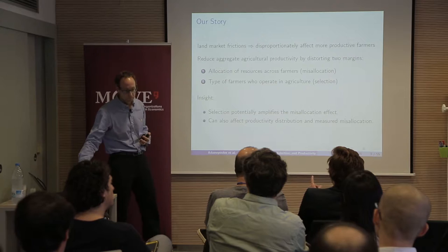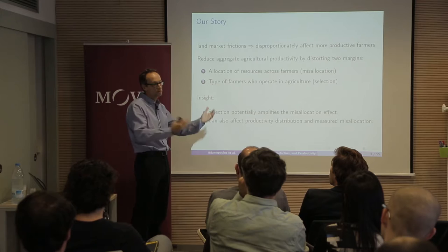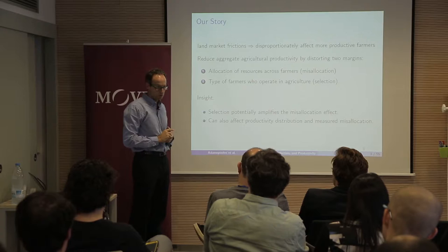Question: Clarify the selection channel — can farmers operate in agriculture or something else, or is it about the type of agents who become farmers? It's going to be a standard ROY model where people have ability in two sectors and will optimally choose where to work.